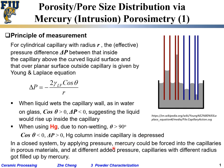In a closed system, by applying pressure we can force the mercury gradually into different sizes of pores or capillaries. For smaller pores, we must apply higher pressure for the mercury to enter. For larger pores, we do not need as much pressure. That is essentially the principle of mercury porosimetry.